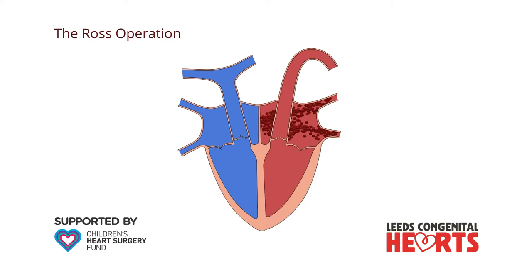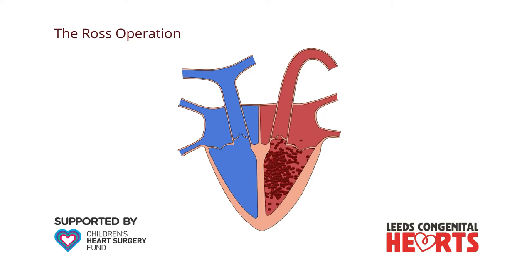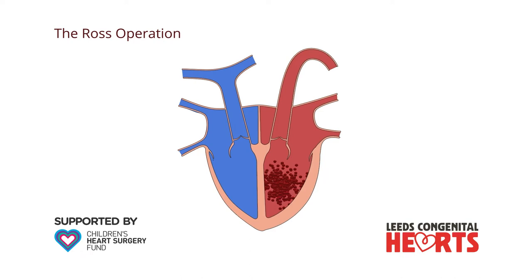When aortic valve surgery is required, the most common operation is to implant a new valve, either mechanical or tissue. We explain these in our video on bicuspid aortic valve. In some patients, the ROS operation is an alternative option to standard valve replacement.